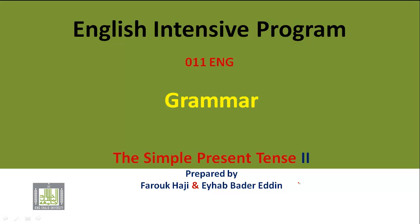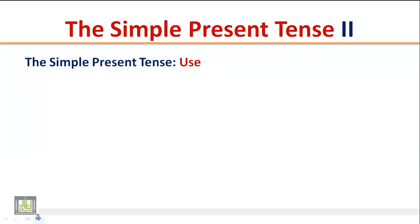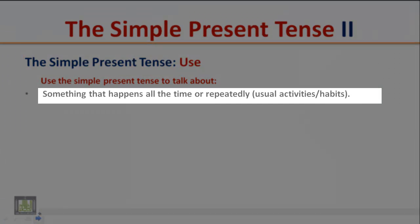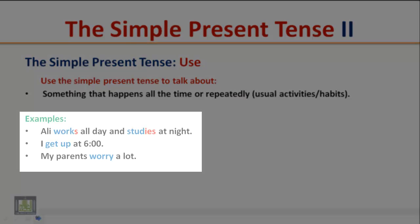English Intensive Program 011 Grammar: The Simple Present Tense Part 2. Use the simple present tense to talk about something that happens all the time or repeatedly, such as usual activities and habits. Examples: Ali works all day and studies at night. I get up at 6. My parents worry a lot.